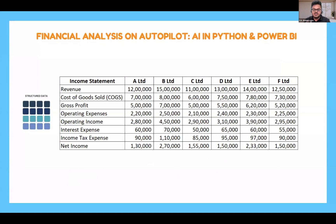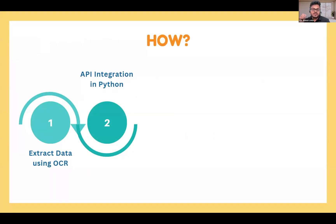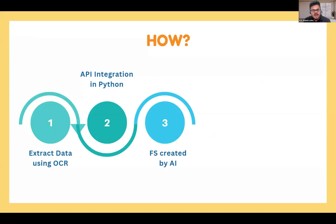Let's automate this process so that even if we have financial statements which are scanned images from six different companies, we can arrive at something structured. The process: first, we extract data from scanned PDF financials or scanned images using optical character recognition. Next, I've integrated OpenAI and DeepSeek APIs into Python. Once the data is extracted by Python, it calls the OpenAI API or DeepSeek API, and the financial statements are created by the AI itself.